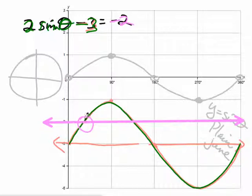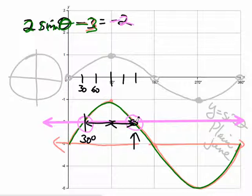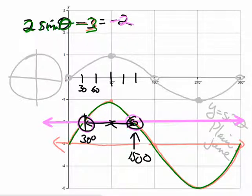It equals negative 2 right there, then goes high and comes back down — and right there again. It turns out it's 30. Where's the other place? We knew from the other method it's 150. But you can tell by symmetry: if you reach the peak at 90, which is 60 degrees past the first answer, then 60 degrees past the peak should bring you back to the same height — giving 90 plus 60 equals 150. Symmetry confirms it's 150, which matches our previous answer. So there are your two answers, visible on the graph.